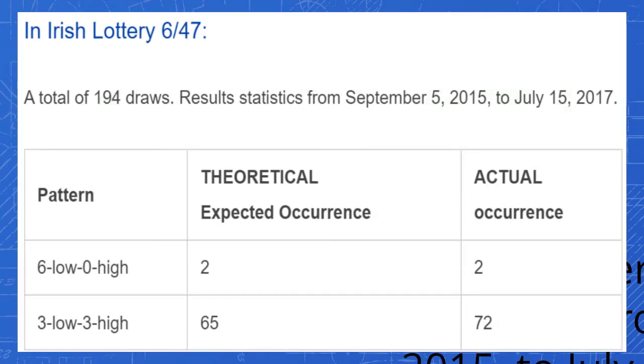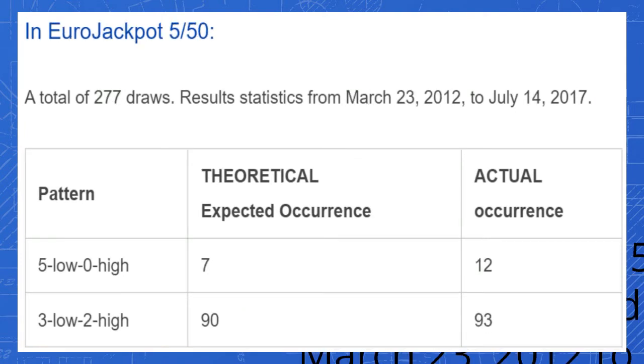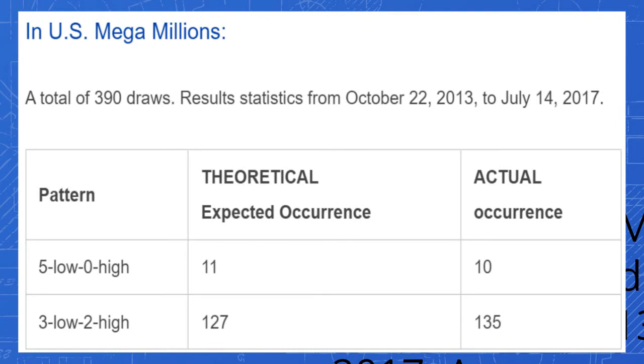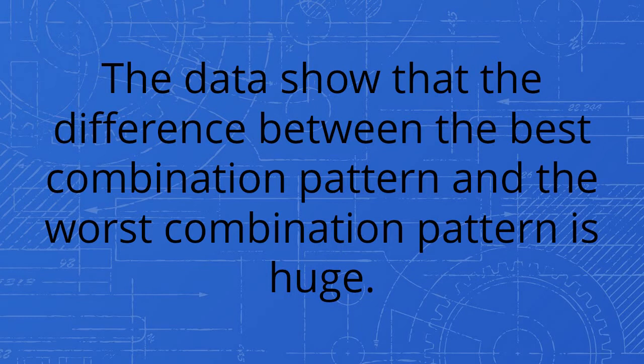In Irish Lottery 6/47, there are 194 draws from September 5, 2015 to July 15, 2017. As you see, the actual results and the theoretical estimation closely agree together. In EuroJackpot 5/50 game, there are 277 draws from March 23, 2012 to July 14, 2017. You can see a close agreement between theoretical and the actual results. In UK Lotto 6/59, there are 182 draws from October 10, 2015 to July 15, 2017. There is a close match between theoretical calculation and the actual results. In the U.S. Mega Millions game, there are 390 draws from October 22, 2013 to July 14, 2017. As you see, the actual results didn't go too far from the mathematical expectation.